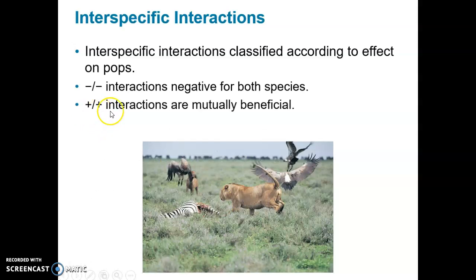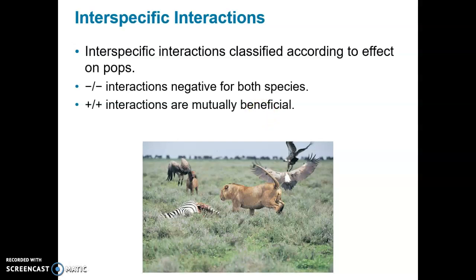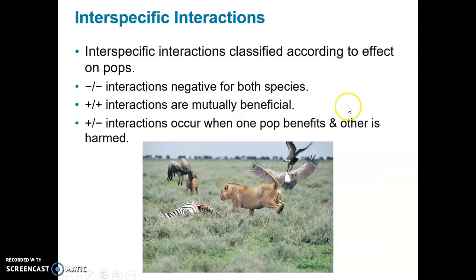If it's a plus-plus interaction — beneficial to both — then both species are mutually aided. For example, protists in termite guts help them digest wood. The protists benefit because the termite gives them a place to live and feeds them by ingesting wood. The termite benefits because the protists digest the wood and provide nutrients for the termite. That's a plus-plus, mutually beneficial interaction.